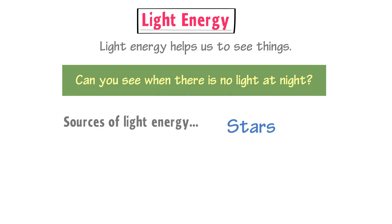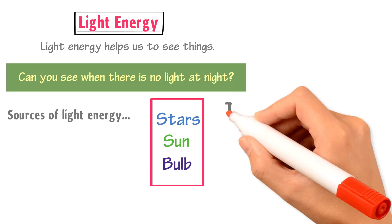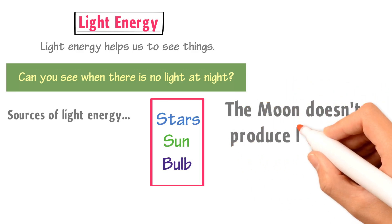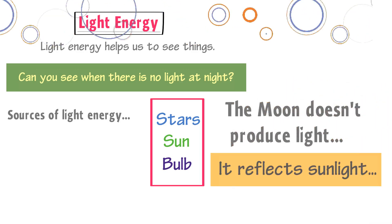There are different sources that produce light energy. For example, stars, sun and bulbs. Remember that moon doesn't produce light energy. Moon reflects the light of sun.